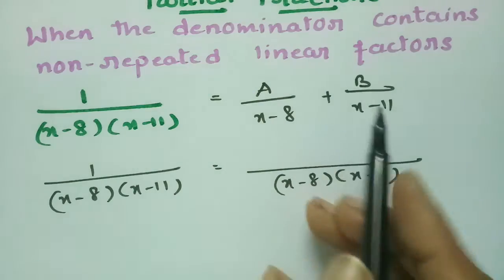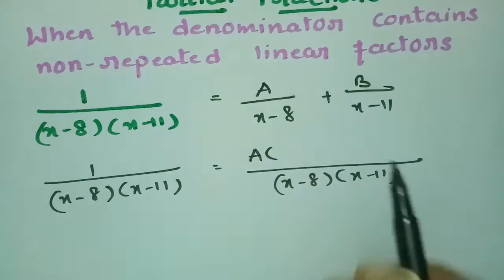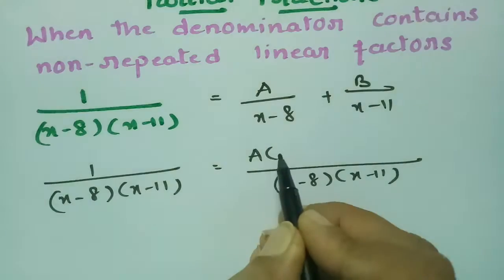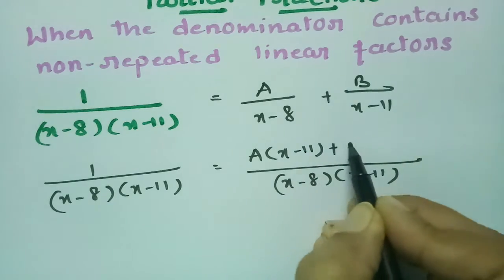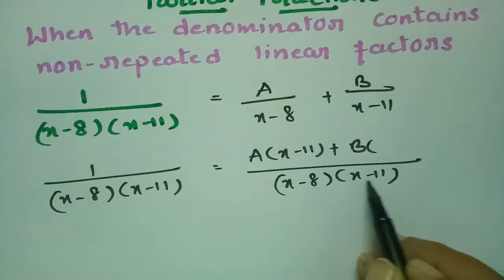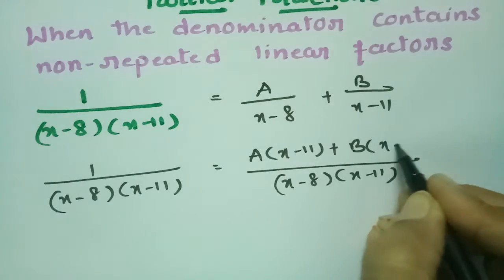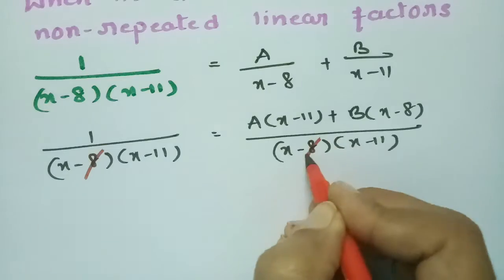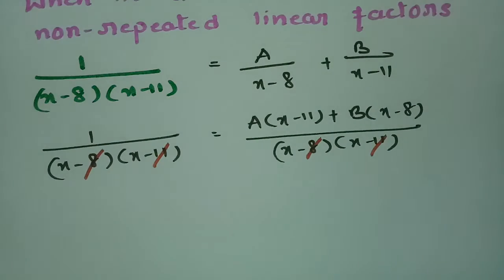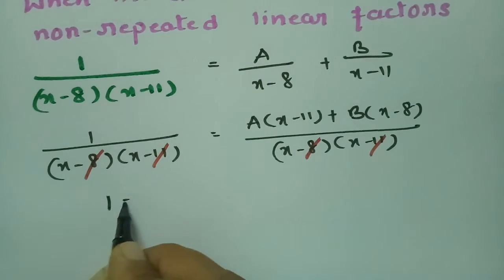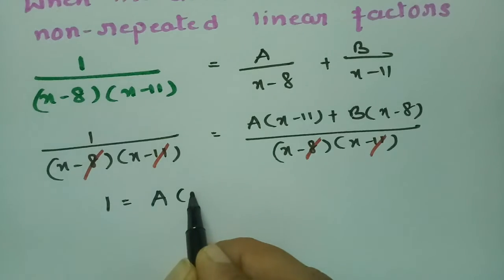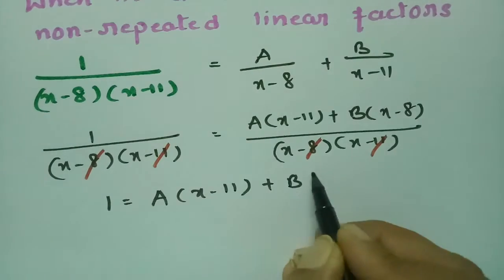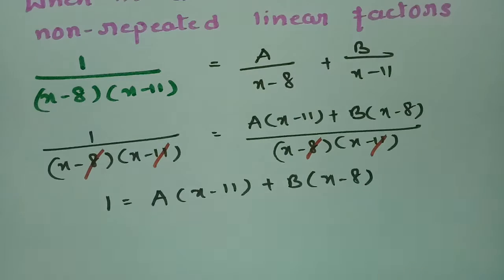Now, if I cross multiply, this is A times — there is (x minus 8), and what is left over? — (x minus 11), plus B times — there is (x minus 11), what is left? — (x minus 8). Now I cancel (x minus 8) and (x minus 11) on both sides. Equation 1 is: 1 = A(x minus 11) + B(x minus 8).